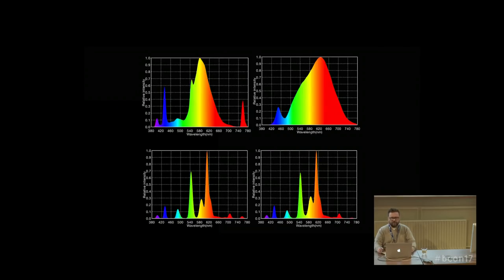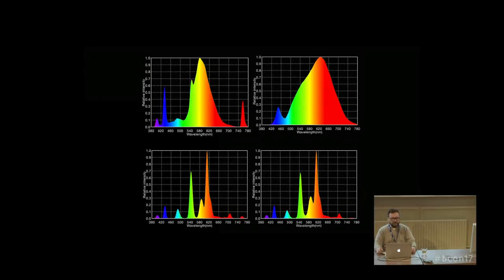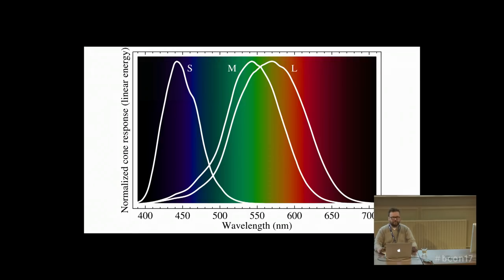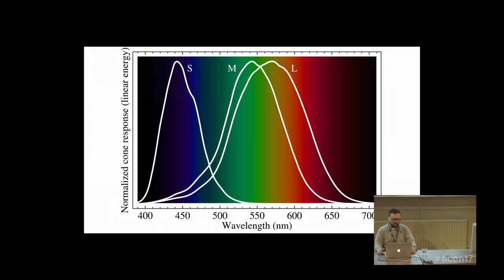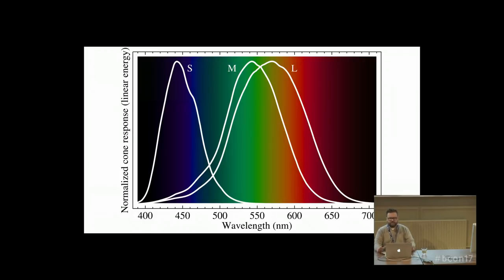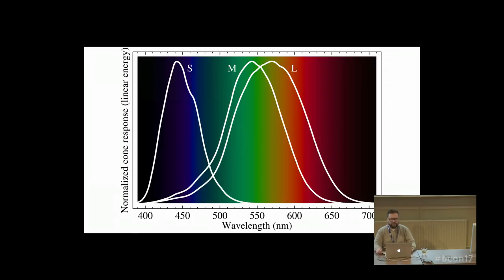We can also see graphs called spectral power distributions. On the x-axis we have the wavelengths, and on the y-axis we have the power of each wavelength. How do we humans see color? We have three receptors in our eyes called cones, which are responsible for color vision. On this graph we can see how those cones respond to wavelengths. The S cone is most sensitive to about 440nm. The cones overlap, so some wavelengths trigger one, two, or even all three of those receptors.